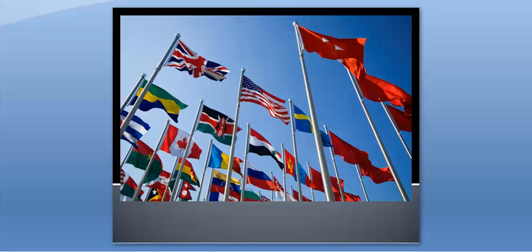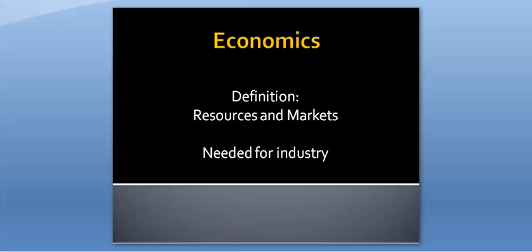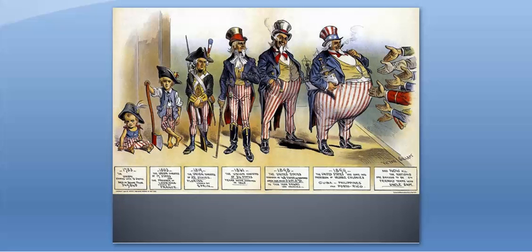The third cause of imperialism is economics. Industrial nations need resources and markets in order to power their industries and sell their goods. These resources can be found in other countries, and in order to gain access to these resources, nations will practice imperialism — either by taking over the area in question or creating influence to gain the best possible results for trade between the two countries.